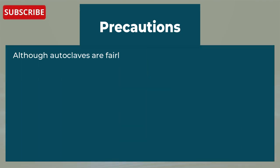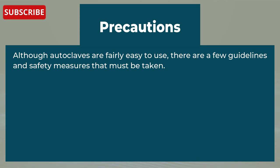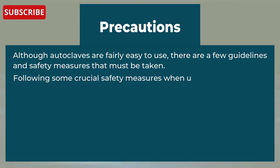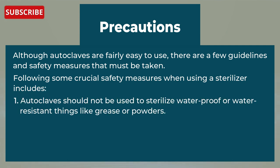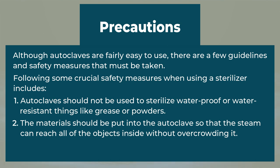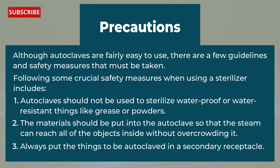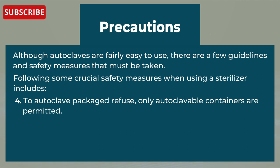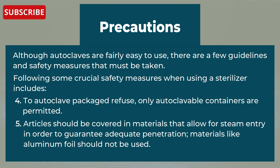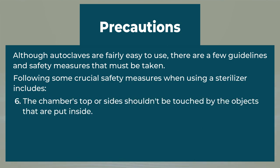Now let's see the precautions. Although autoclaves are fairly easy to use, there are guidelines and safety measures that must be taken. These include: First, autoclaves should not be used to sterilize waterproof or water-resistant things like grease or powders. Second, materials should be placed into the autoclave so that steam can reach all objects inside without overcrowding. Third, always put items to be autoclaved in a secondary receptacle. Fourth, only autoclavable containers are permitted to autoclave packaged refuse. Fifth, articles should be covered in materials that allow for steam entry to guarantee adequate penetration — materials like aluminum foil should not be used. Sixth, the chamber's top or sides should not be touched by objects placed inside.